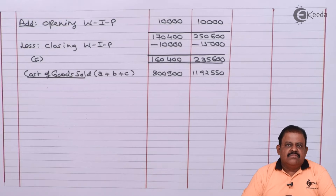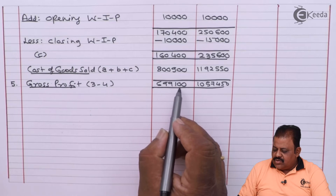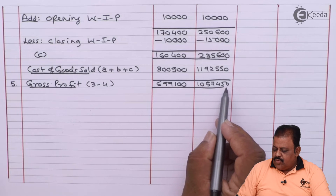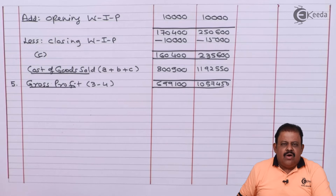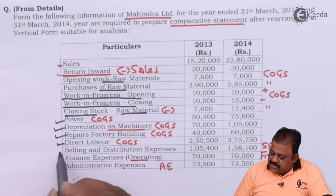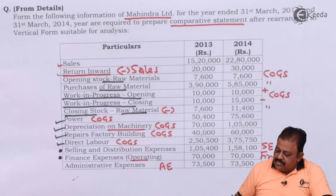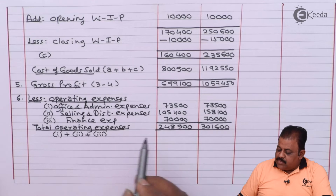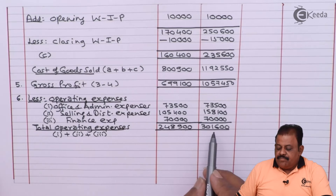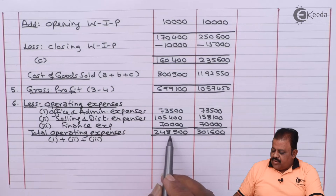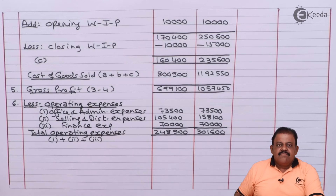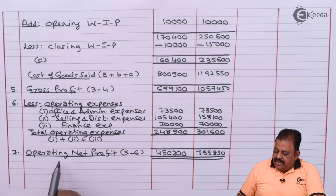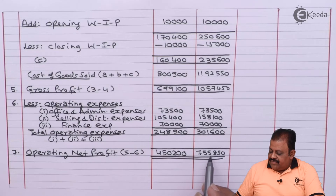Cost of goods sold is deducted from net sales to arrive at gross profit: 6 lakh 99,100 and 10 lakh 57,450. From gross profit we deduct total operating expenses — selling and distribution expenses, finance expenses, and administrative expenses — giving total operating expenses of 2 lakh 48,900 and 3 lakh 1,600. Operating net profit is 4 lakh 50,200 and 7 lakh 55,850.